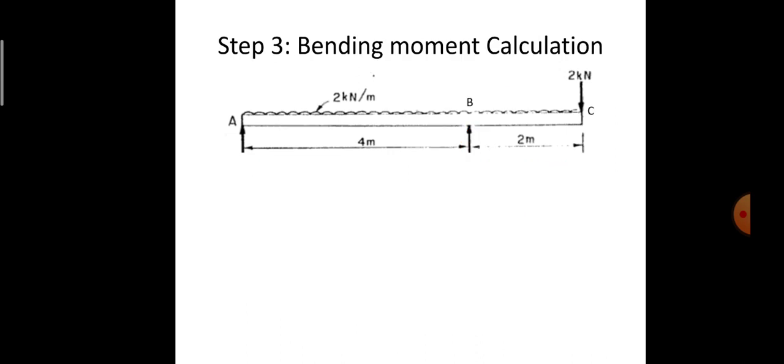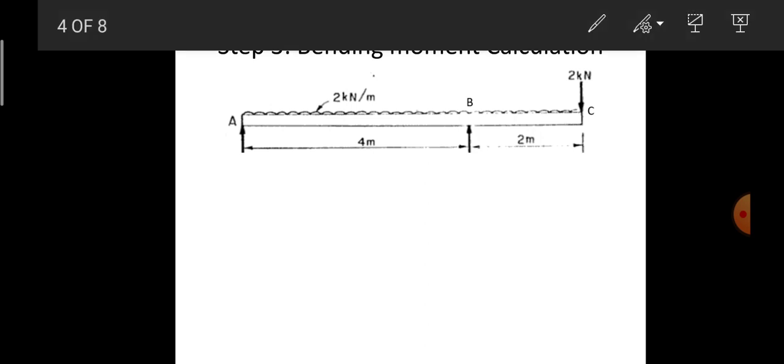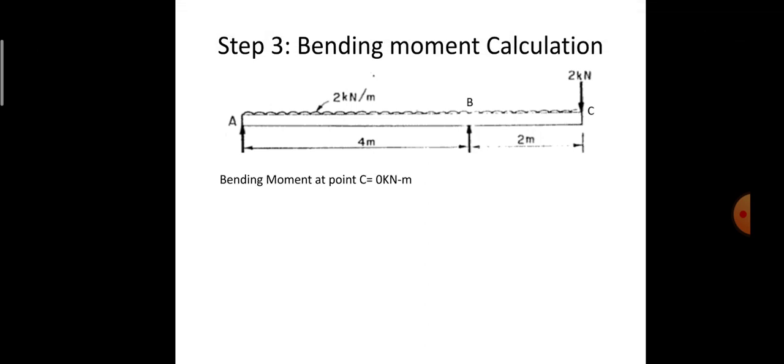Next is calculation of bending moment at each point. Starting from point C: when calculating bending moment, we consider only previous points, not the reference point itself, since the perpendicular distance at the reference point is zero. Since there are no points previous to C, the bending moment at C = 0.